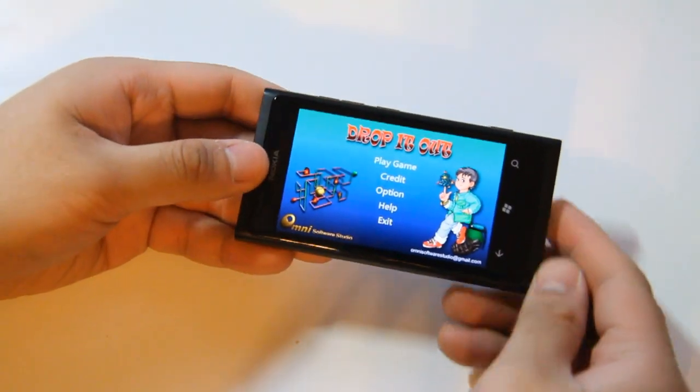That was Drop It Out demo on the Nokia Lumia 800. Thanks for watching. I'll see you next time.